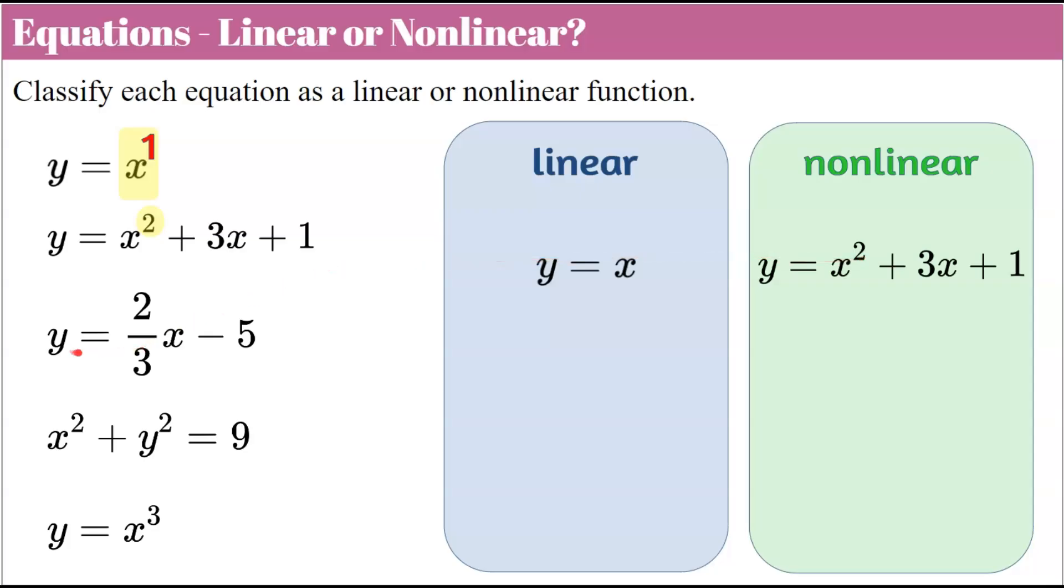Our third equation is y equals two thirds x subtract 5. This is written in slope-intercept form, where m the slope is two thirds and b the y-intercept is negative 5. So therefore, that is a linear function. We also note that the exponent here is an invisible one.